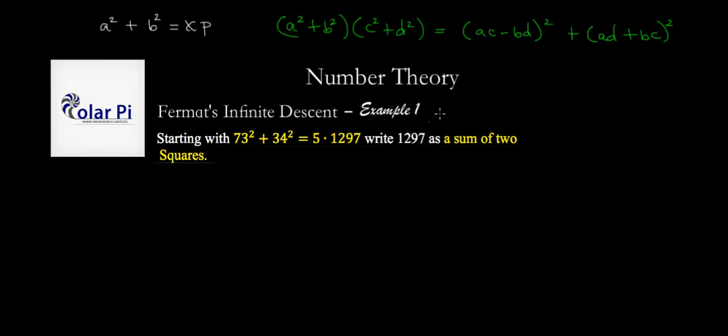In particular, in this example we're going to use Fermat's descent method to write this number 1297, which is a prime, as a sum of two squares. Notice that to start we've got a lot of help in that we're given this equation which is of this form, and so we're going to use descent to turn this x...